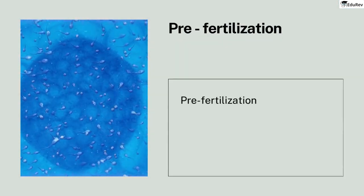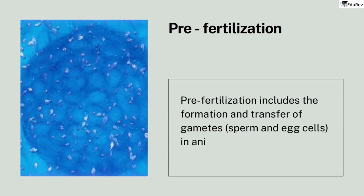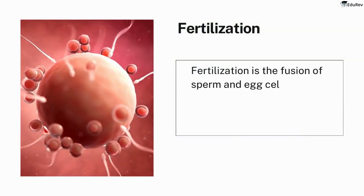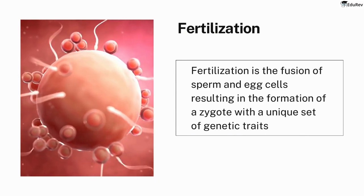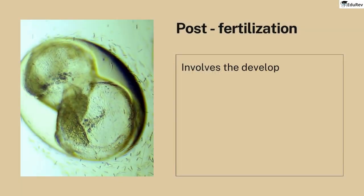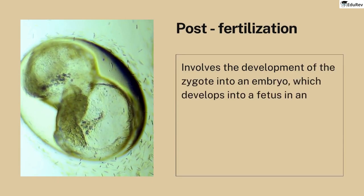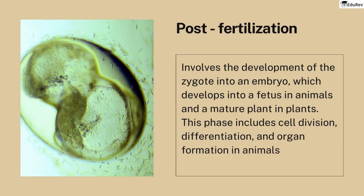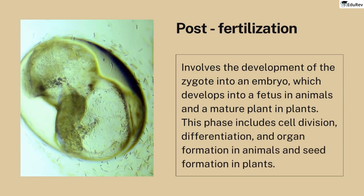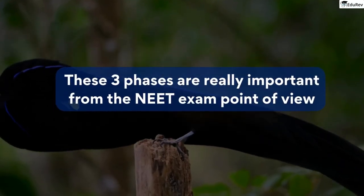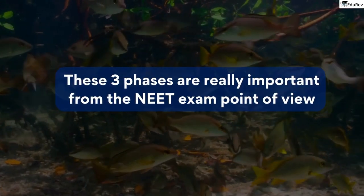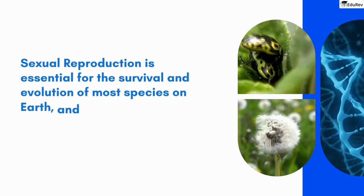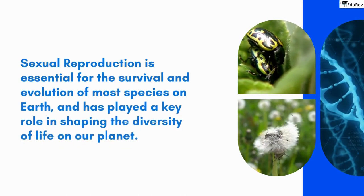Pre-fertilization includes the formation and transfer of gametes — sperm and egg cells — in animals, and also involves pollination in plants. Fertilization is the fusion of sperm and egg cells, resulting in the formation of a zygote with a unique set of genetic traits. Post-fertilization involves the development of the zygote into an embryo, which develops into a fetus in animals and a mature plant in plants, including cell division, differentiation, organ formation, and seed formation. Overall, sexual reproduction is essential for the survival and evolution of most species on Earth.